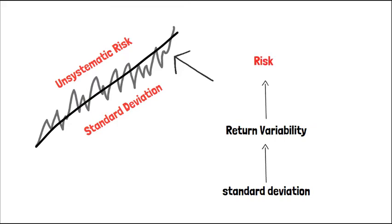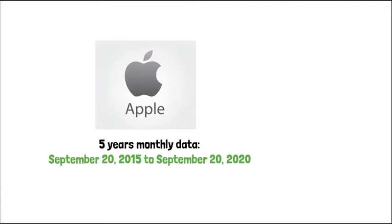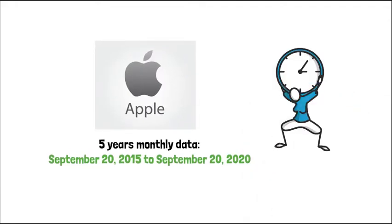We are going to use Apple Incorporation's last five years monthly data, September 2015 to September 2020. You can use different time ranges, but if you do so, your risk measures will be a little bit different. If you'd like to get a result similar to mine, I would ask you to follow my steps from this point on.